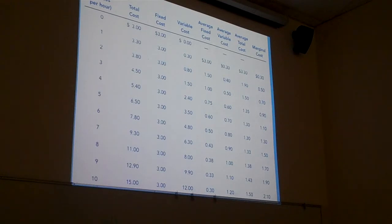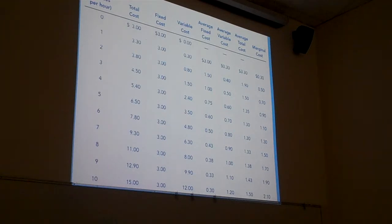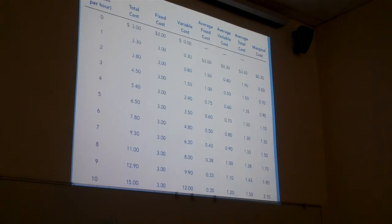Will the average fixed cost ever reach zero? Never. Because no matter how many you make, the fixed cost never changes — it's always $3, whether you make one or a million. But the average fixed cost is just divided by the number of units of output, so it's always going to be falling, but always at a slower and slower rate. The average fixed cost falls very fast at first and continues to fall, but at a decreasing rate.